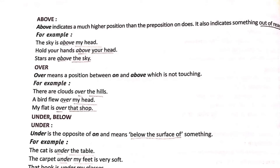Then comes 'over'. Over means a position between 'on' and 'above' — not touching the surface but not completely out of reach either. 'On' is used when something is touching a surface; 'above' when something is out of reach; 'over' for what is in between. Examples: 'There are clouds over the hills.' — clouds are below the sky but above the hills. 'A bird flew over my head.' 'My flat is over that shop.'